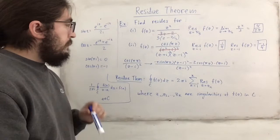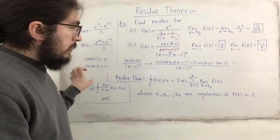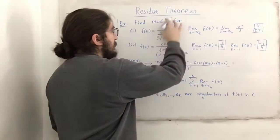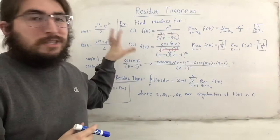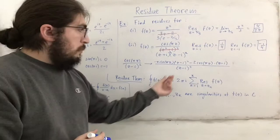In general, the residue theorem says: the integral equals 2 pi i times the sum of all residues over all singularities contained inside our closed region C. So if we know how to find residues, we can calculate complex integrals just by taking 2 pi i times the sum of the residues at all singularities inside the contour.